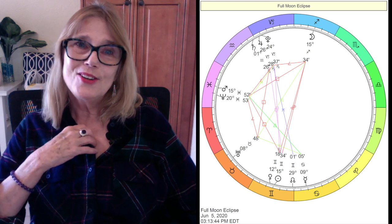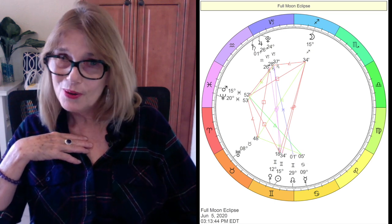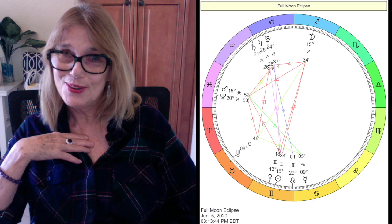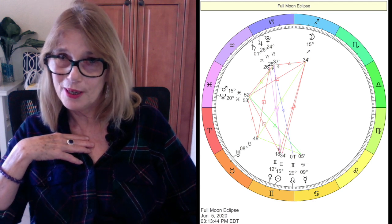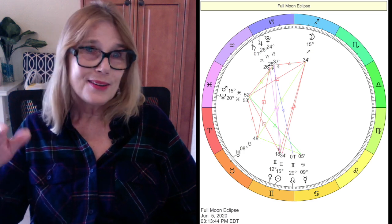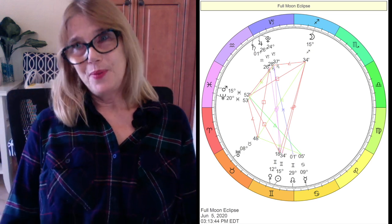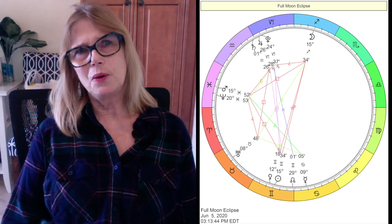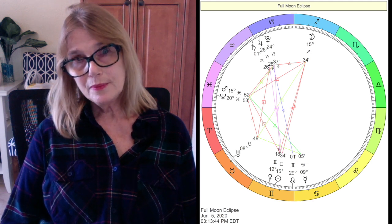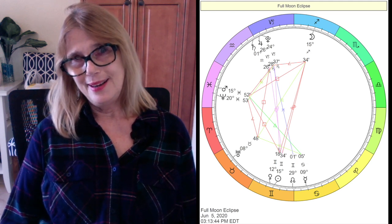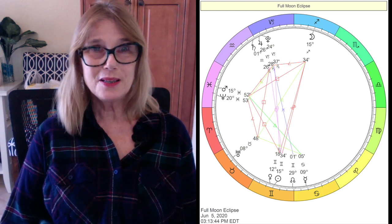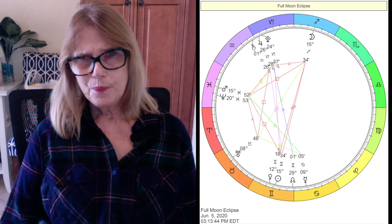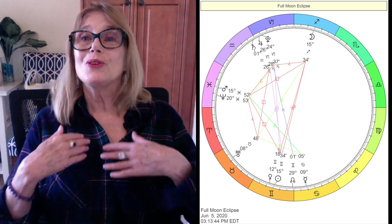The inconjuncts are to authority figures in Capricorn. To Jupiter and Pluto in Capricorn. That's just messy. That's just messy. It's complex. Just do your best to try to be true to yourself.